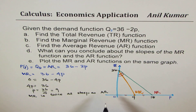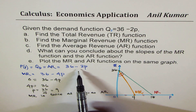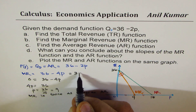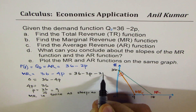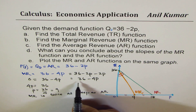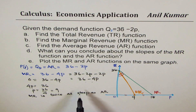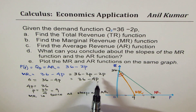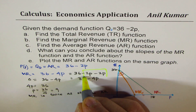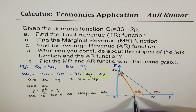Marginal revenue is twice as steep as average revenue. This also makes sense because we can write MR as 36 minus 2p minus 2p, giving directly 36 minus 4p. This is a useful approach for students who don't yet understand calculus — you can derive the result from the rate of change directly.